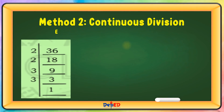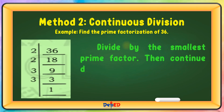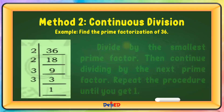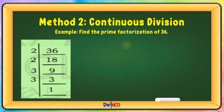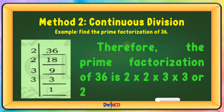Method 2: Continuous Division. Example — find the prime factorization of 36. Divide by the smallest prime factor, then continue dividing by the next prime factor. Repeat the procedure until you get 1. Therefore, the prime factorization of 36 is 2 times 2 times 3 times 3, or 2² times 3².